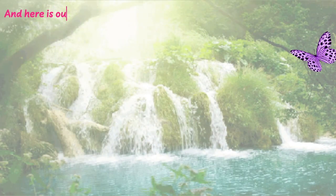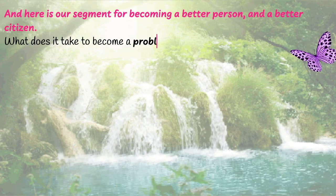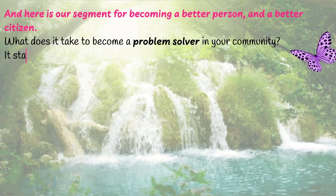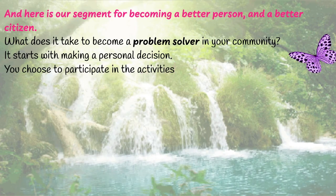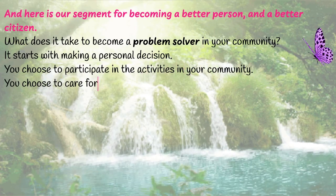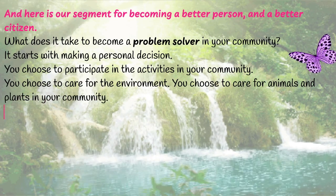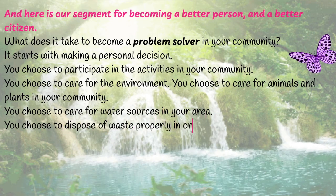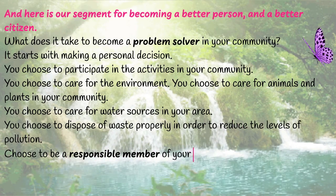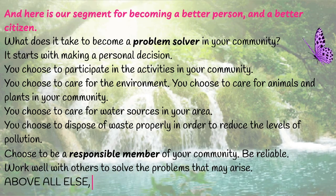And here is our segment for becoming a better person and a better citizen. What does it take to become a problem solver in your community? It starts with making a personal decision. You choose to participate in activities in your community, care for the environment, care for animals and plants, and care for water sources in your area. You choose to dispose of waste properly to reduce pollution. Choose to be a responsible member of your community. Be reliable. Work well with others to solve problems. Above all else, stay safe.